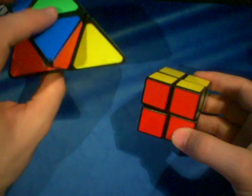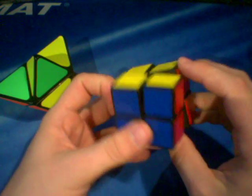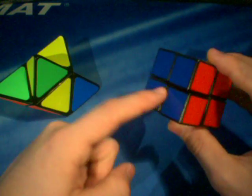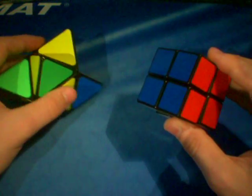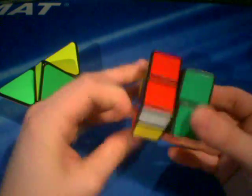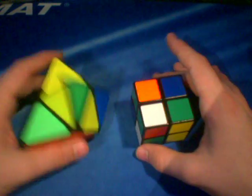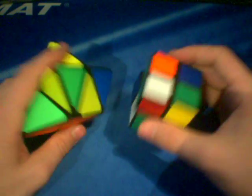Okay, now that the Pyramorphings is scrambled up, I'm going to scramble the Isshin 2x2 also and solve them simultaneously so you can see how the 2x2 relates to the Pyramorphings. Okay, I think that's good. They're both scrambled now, so let's start to solve them.